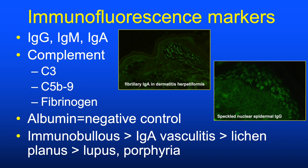DIF testing is usually performed in a panel of about six stains: IgG, IgM, IgA, C3, fibrinogen, and albumin as a negative control. DIF testing is essential—considered the gold standard—for diagnosis of immunobullous disorders such as pemphigoid, pemphigus, and dermatitis herpetiformis. It is also critical in establishing a diagnosis of IgA vasculitis and can support diagnoses of lichen planus, lupus, and porphyria.